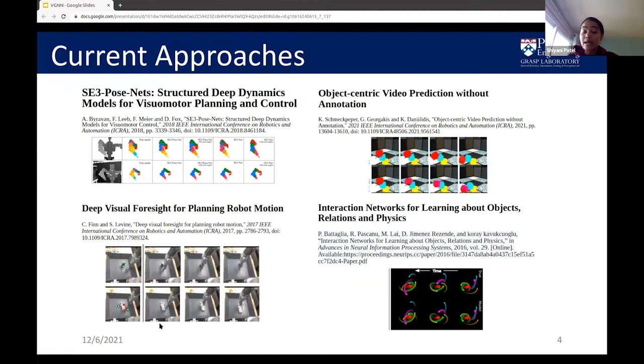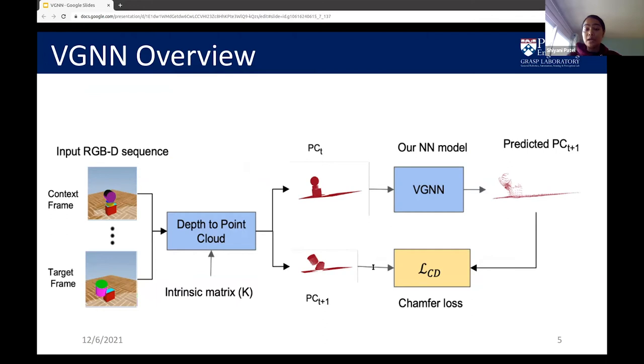All of these works have brought novelty to predictive modeling, but they also rely on information from the environment. We designed VGNN to be a more general pipeline and I will show you the overview of VGNN. We take in the RGBD image as input converted to point cloud using the standard camera intrinsic matrix and send it to our model for predicting point clouds for future frames.